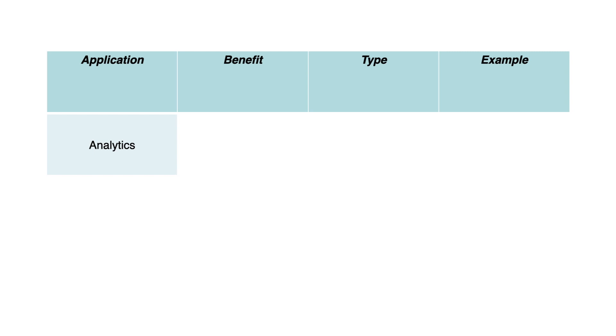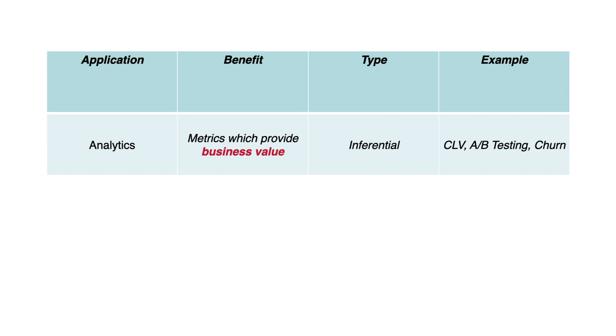Today data science is fairly ubiquitous — it's probably harder to find something that doesn't use data science than something that does. The first broad application category is business intelligence: analytics. This is how do we get metrics about some process that generates data to get business value. It involves inferential statistics, looking at historical data, and making inferences about future actions. Examples include customer lifetime value, A/B testing, and automated churn prediction for company users.